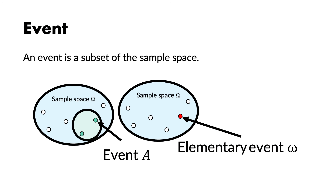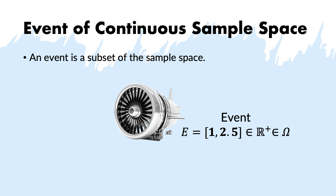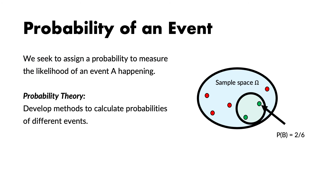Another important concept for probability systems is the concept of event. Any event is also a set, but it is a subset within the sample space. Events can be elementary or they can have more than one element. When talking about continuous sample spaces, defining events can be a little different — for instance, in the engine example, I could define the event from 1 to 2.5, meaning I am interested in all time-to-failures between 1 and 2.5 years.